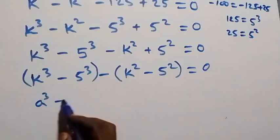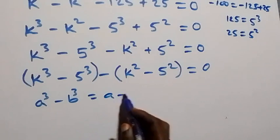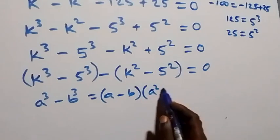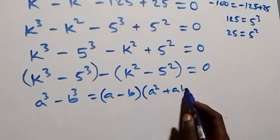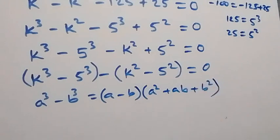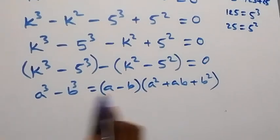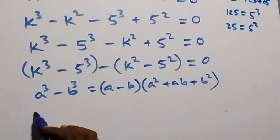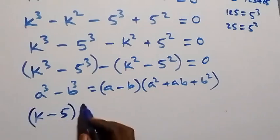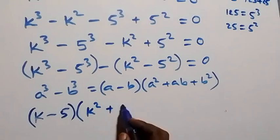Here we group this and apply the difference of two cubes identity: a cubed minus b cubed equals a minus b, times the bracket a squared plus ab plus b squared. Also, the second group is the difference of two squares.